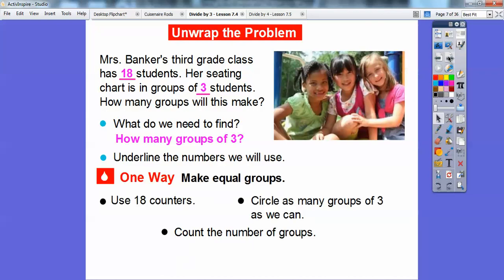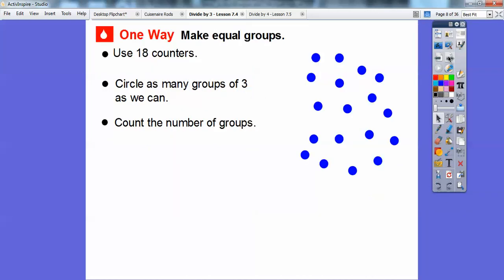One way is to make equal groups. So we'll go ahead and set up 18 counters. We'll use 18 counters and we'll circle as many groups of three as we can and then count the number of groups. So there's 18 counters over there. I'll get started with a few of them here. Here's a group of three and then I'll just continue circling three counters at a time and then we'll count the number of groups.